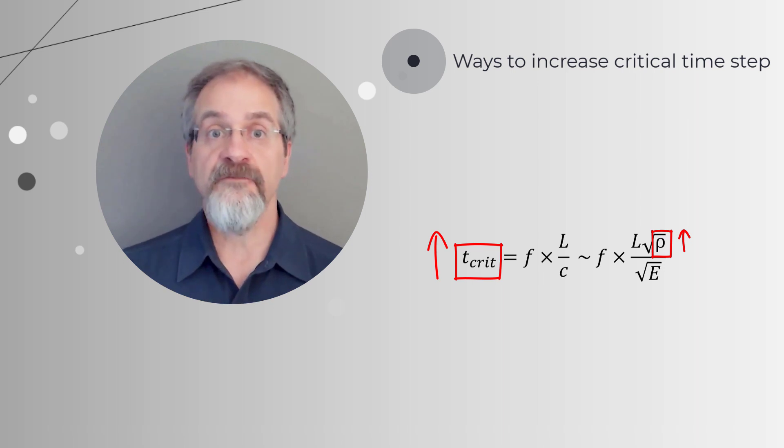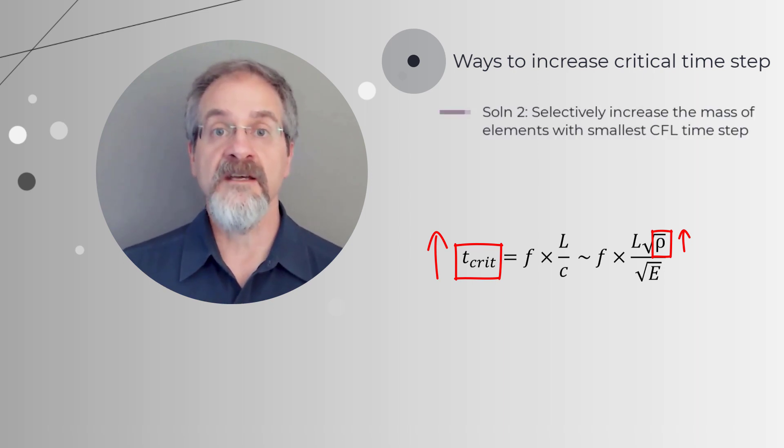We can increase the critical time step by increasing the mass of the part or model. More specifically, if we selectively increase the mass of only those elements with the smallest CFL time step, we can effectively increase the overall time step of the solution. This is called mass scaling.